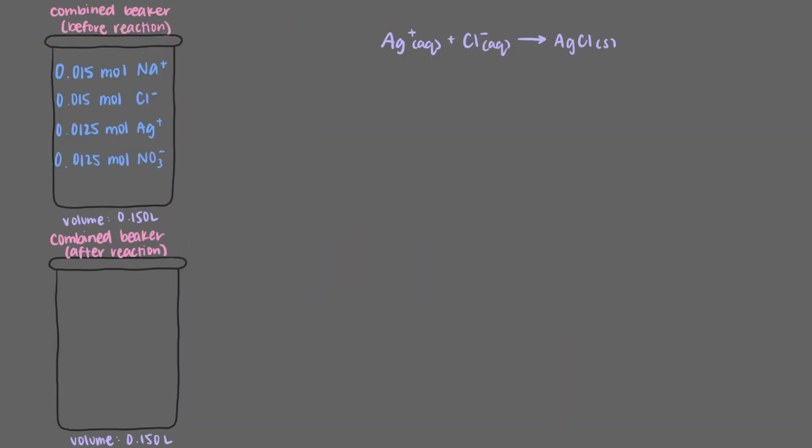Let's start with a new beaker for what will happen at the end of the reaction. We know that the volume stays the same and the number of moles of nitrate and sodium ions won't change. Let's add those here. Also, we just determined that there won't be any silver ions left, so let's put zero moles of silver ions in our beaker just to help us keep track.